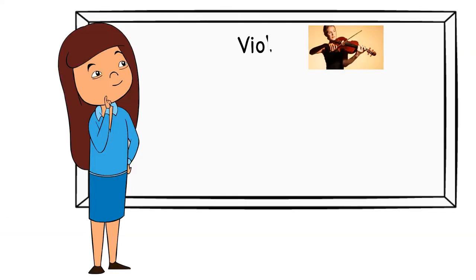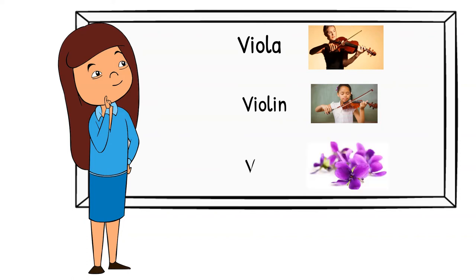Viola. An instrument, a string instrument. Violin. A smaller, but very similar, string instrument. Violet. These flowers are the color of violet. But they're called violets because they're this beautiful flower.